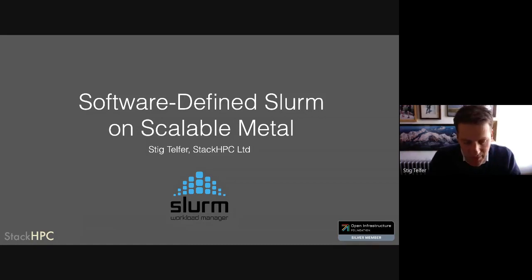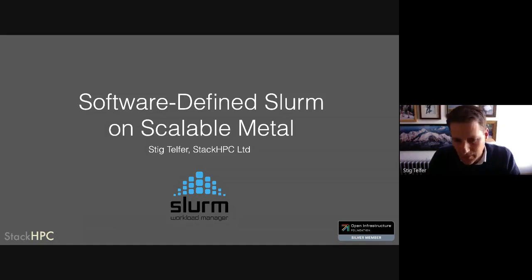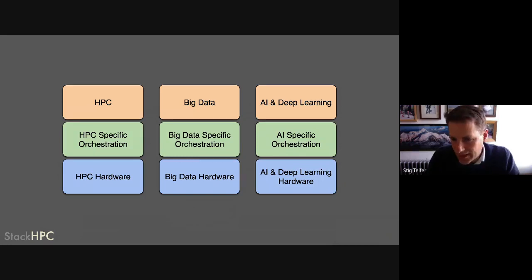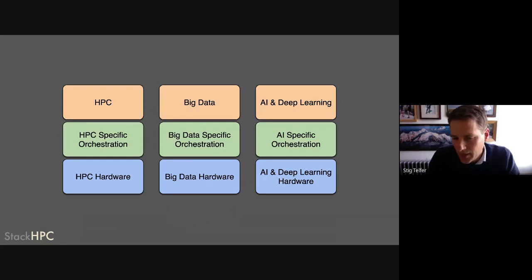There's plenty of prior work for why and how people do SLURM in the cloud, and we'll briefly skip through that. A lot of people will be familiar with this kind of siloed data center, where we have hardware specifically assigned to HPC, hardware for big data — the Hadoops and Sparks and what have you — and maybe hardware for AI and deep learning as well.